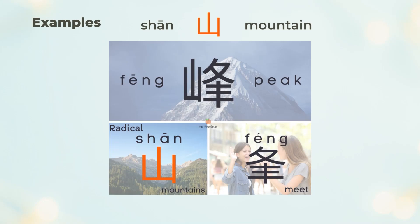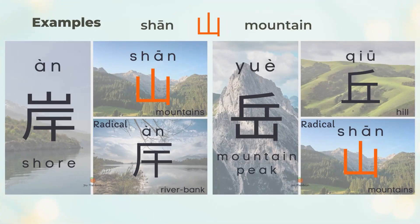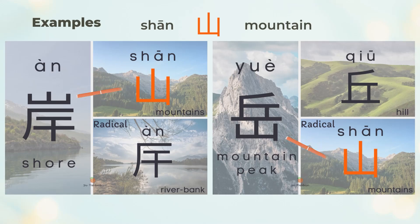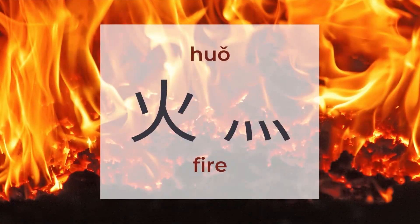峰 is a mountain peak and 山 shows on the left. 岸 means shore and 屿 is a mountain peak. 岸 and 屿 relate to 山, which appears on the top or bottom of those characters.